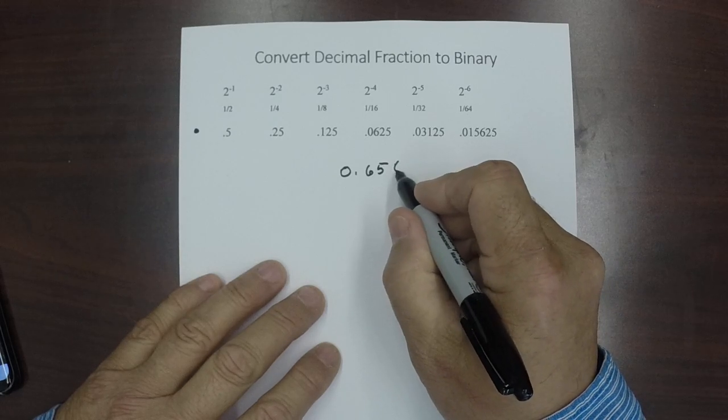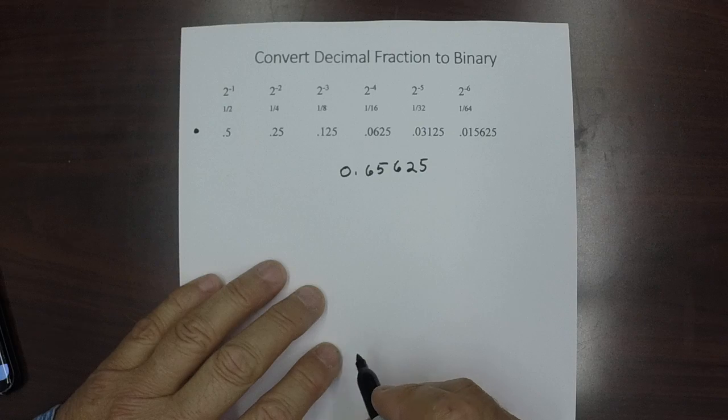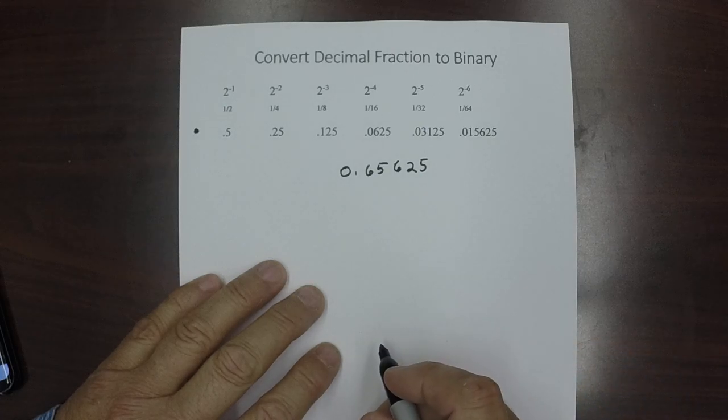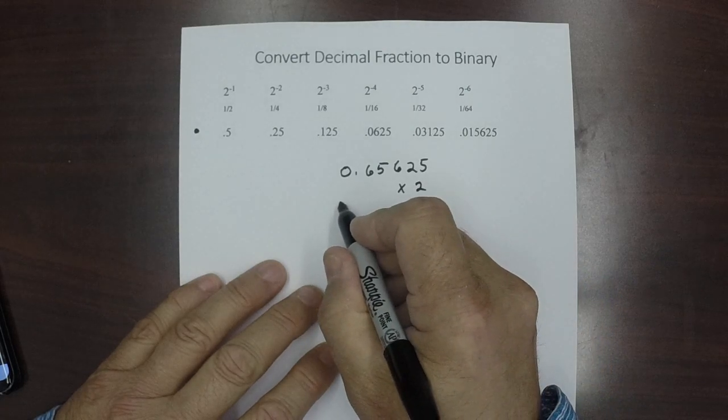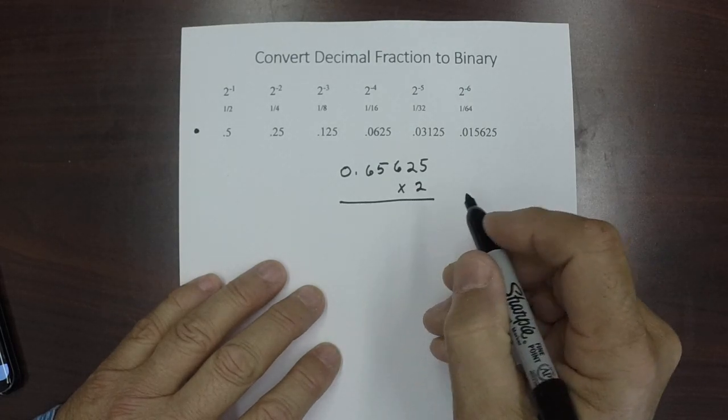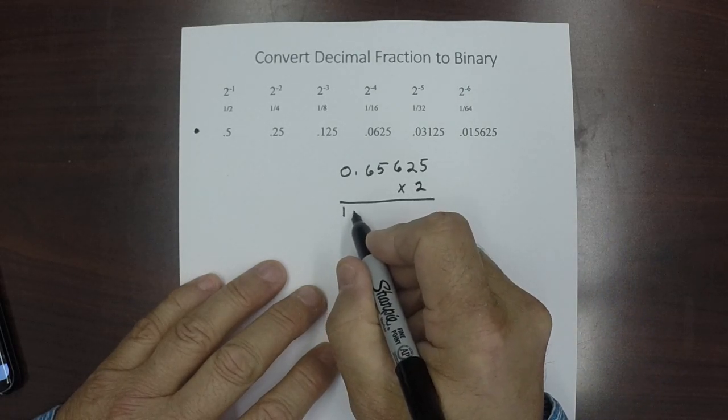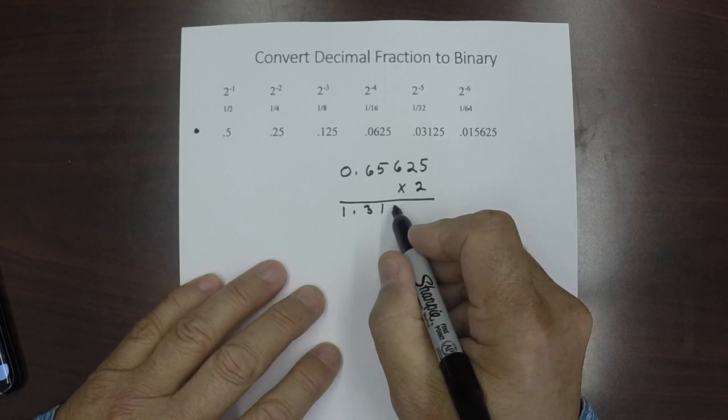0.65625. Alright, now we want to convert that to binary. What do we do? Well we multiply by 2. Multiply by 2. This turns out to be 1.3125.